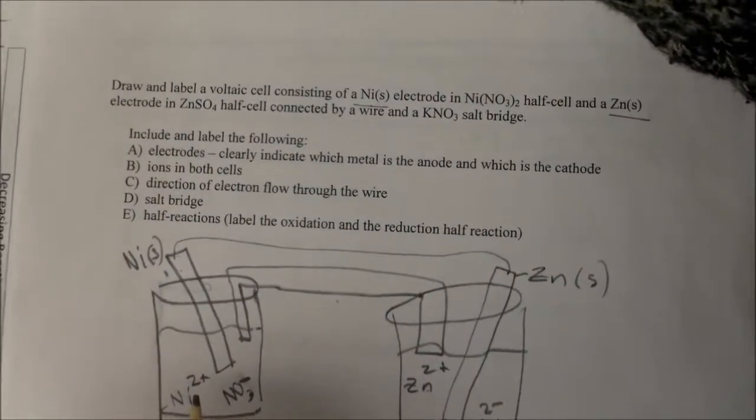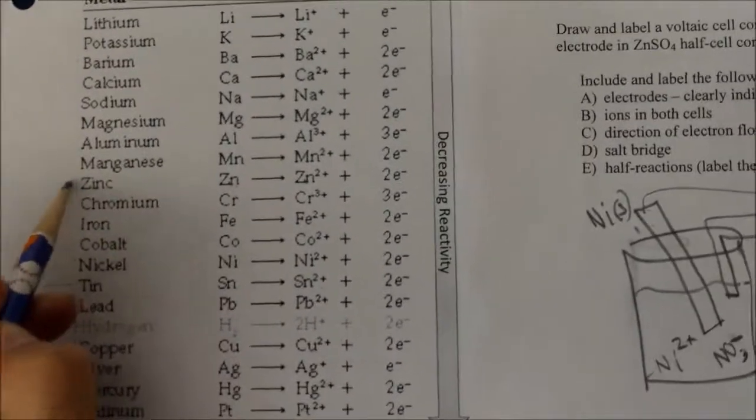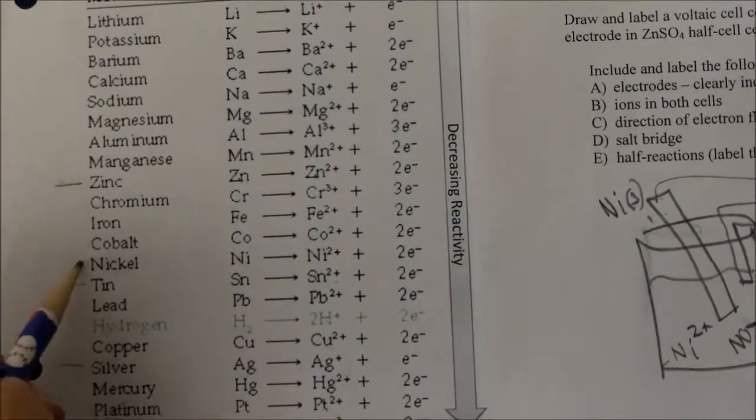We're going to look at the metal activity series to see which one is higher up. Here's our metal activity series and we have zinc and nickel.